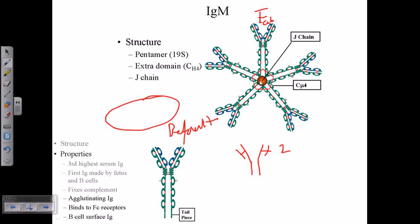IgM has five identical monomers, all with similar heavy and light chains. Therefore, the valency is five times two, which equals ten. So IgM has a valency of ten.